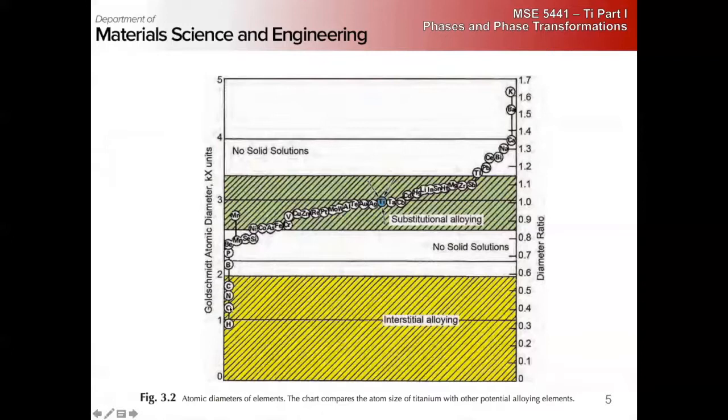And then we also have oxygen and nitrogen, which sit interstitially. And oxygen and nitrogen are really interesting because they really screw with our plastic deformation. We have very different plastic flow behavior and formability based on our interstitial content. So things get mucky and messy really quickly.